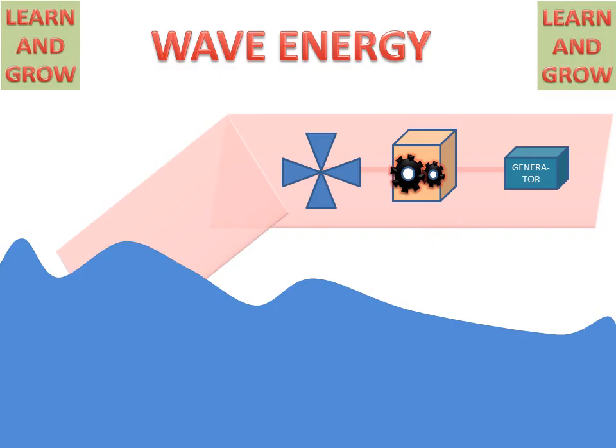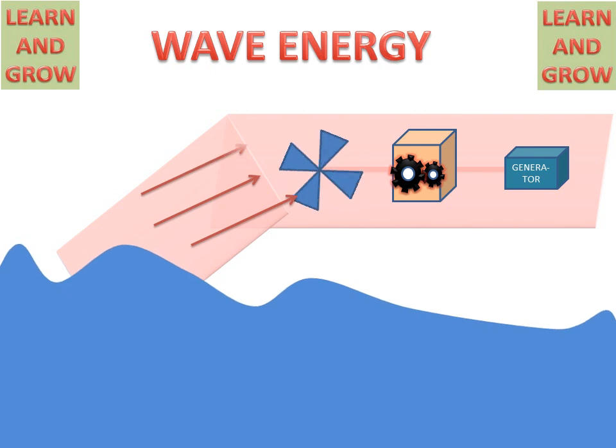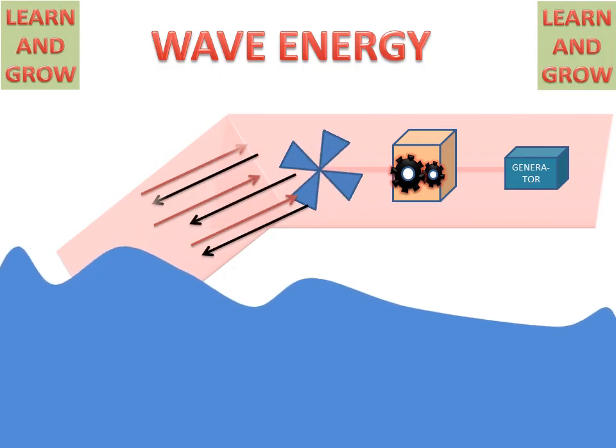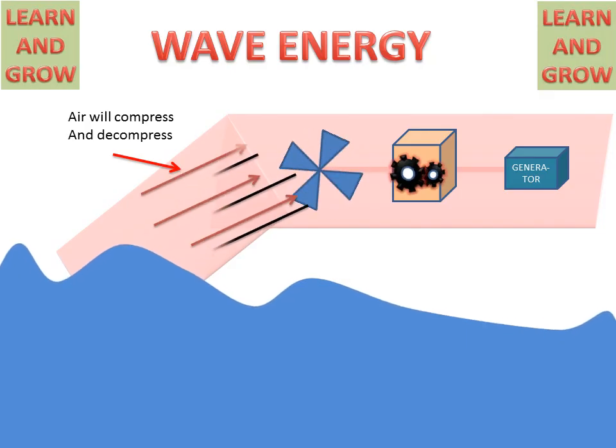Now, what will happen? When waves in the sea act in the chamber, then air will go to the turbine and the turbine will start rotating. And by the action of waves, air will compress and decompress in the chamber.